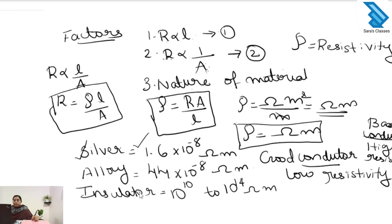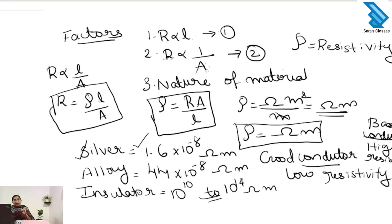The insulator has a high resistivity of 10¹⁰ to 10¹⁴ ohm meter, so we can see that the insulator is a bad conductor of electricity. The substance with low resistivity is a good conductor and the substance with high resistivity is a bad conductor.